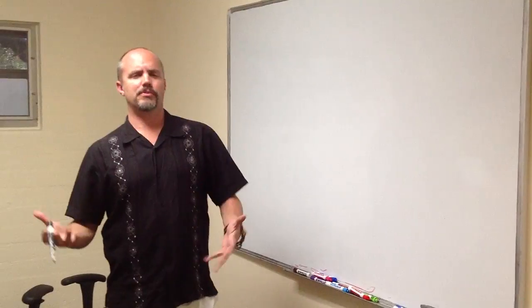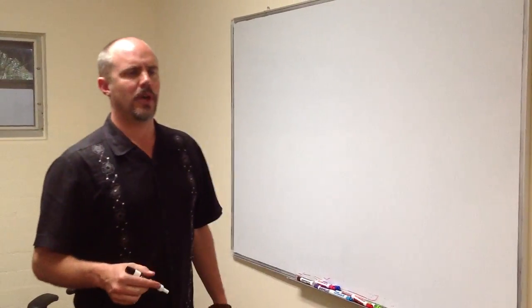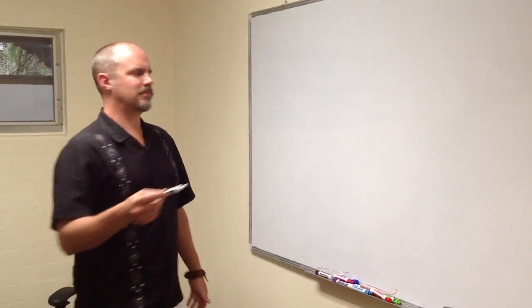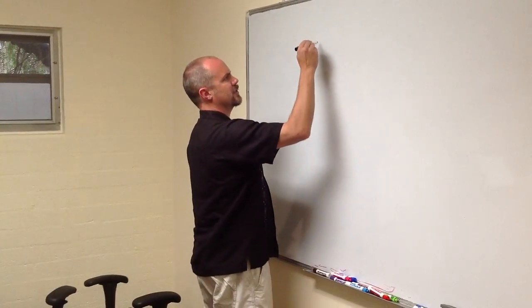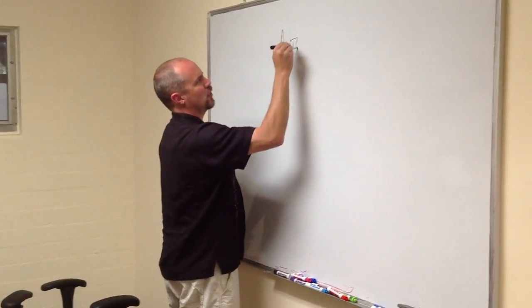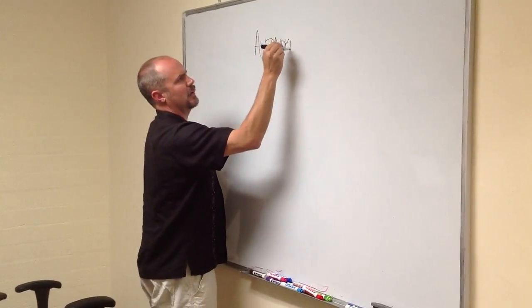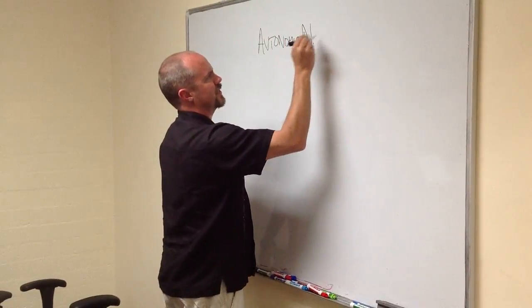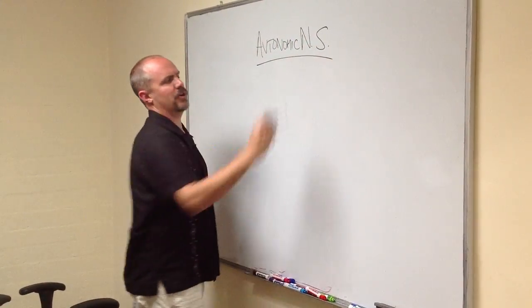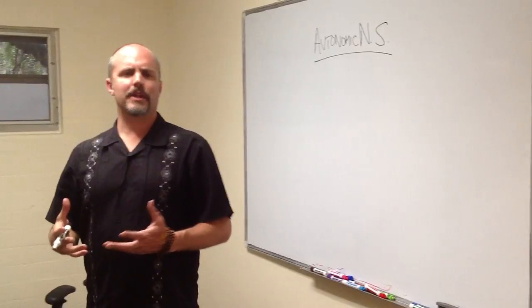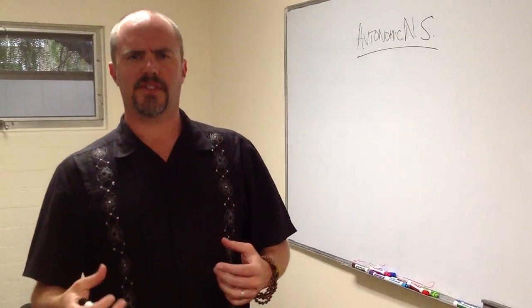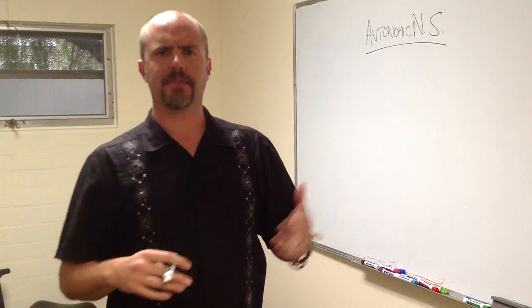What we're going to talk about is how your body responds to stress. Now, you have this part of your nervous system, it's called the autonomic nervous system. Now, that sounds like a big scary word, but it's not really. Autonomic kind of means automatic. It's this thing that just happens automatically. You don't have to think about it.